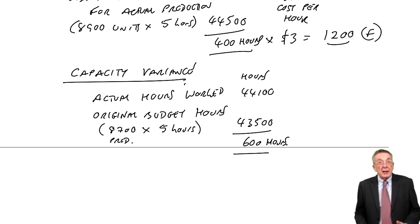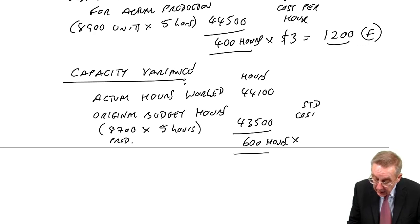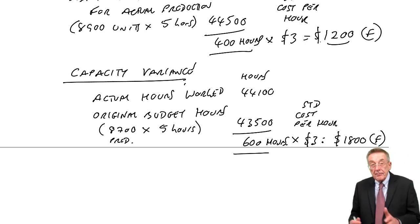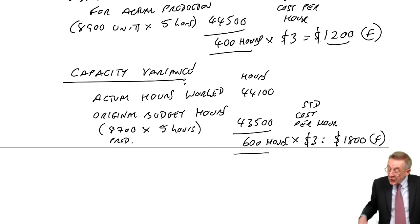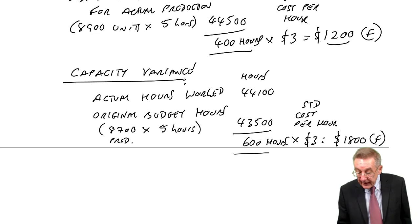And therefore, we budgeted on having 43,500 hours available. So that's how many hours we thought we'd have. We actually got more hours. We got an extra 600 hours. And if we've more hours, we can produce more. And how much does that benefit us? Well, at standard cost per hour, the fixed overhead is $3. That benefits us $1,800. If you get more labour, we can produce more. That's good. It's favourable.